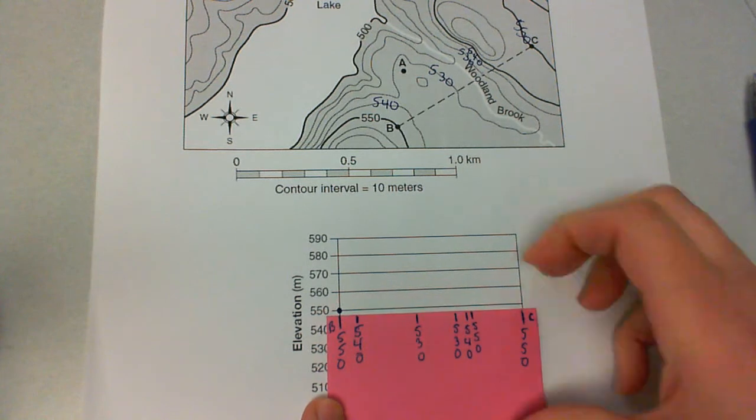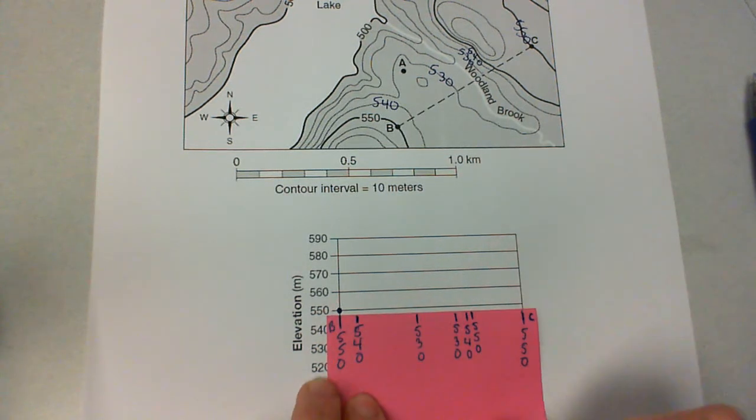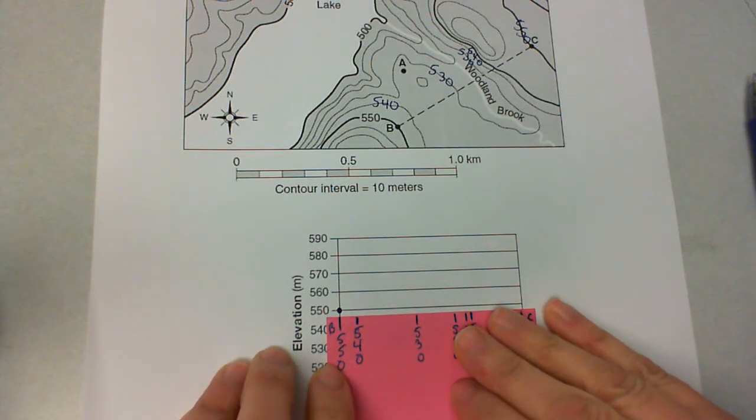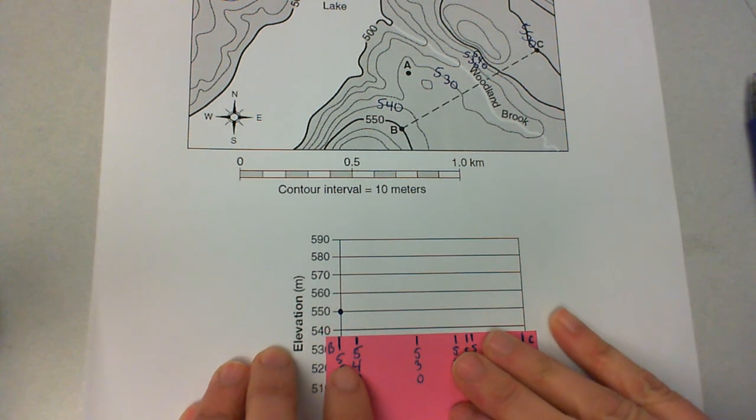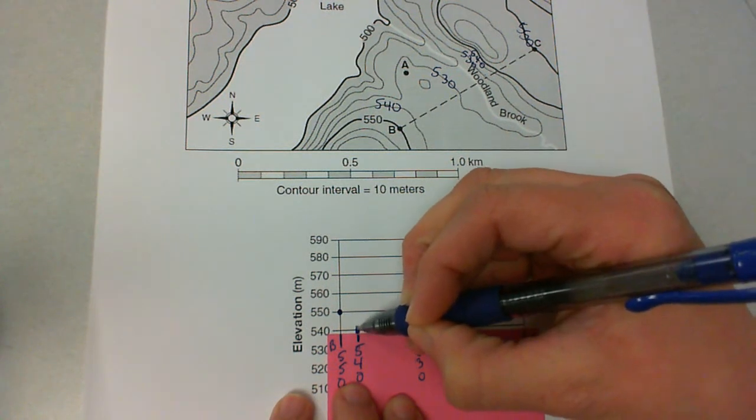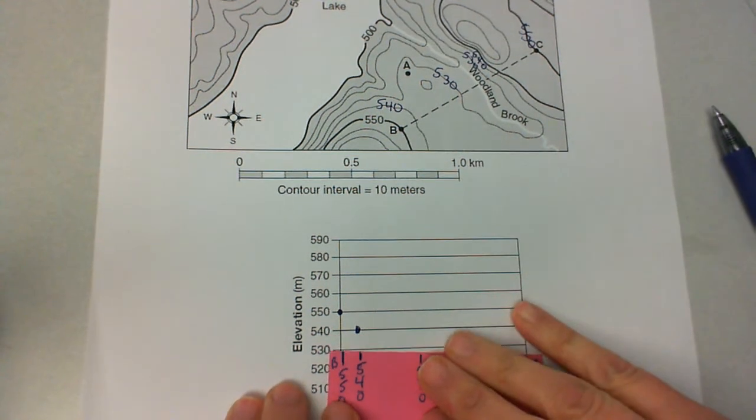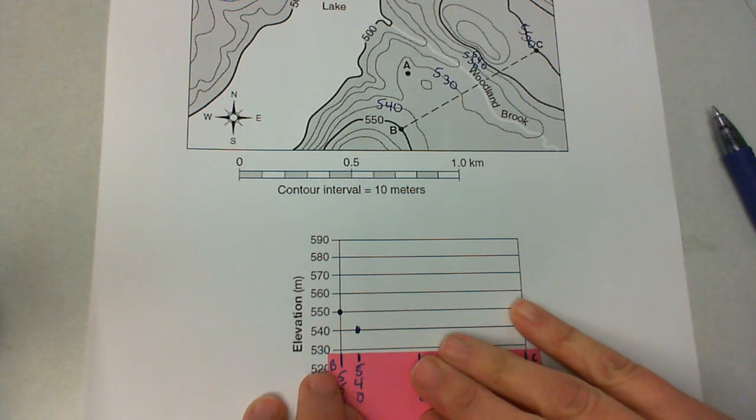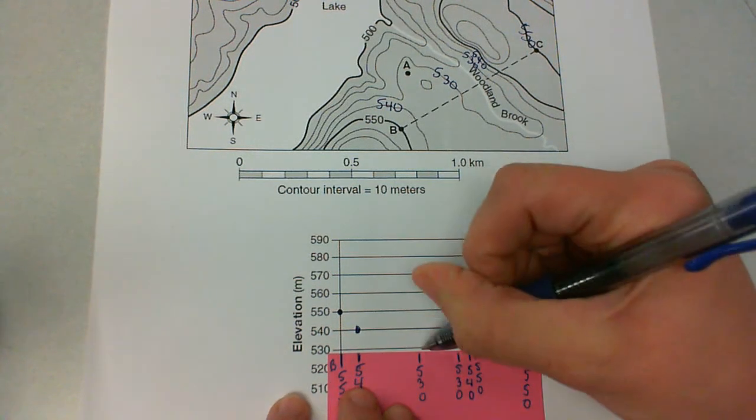And we'll take our paper, slide it down to our next line, which is 540. Again, keeping that first mark lined up with the side of the graph. If it slides a little bit, just put it back. Put a point at 540. And just keep working your way through plotting each of the points.